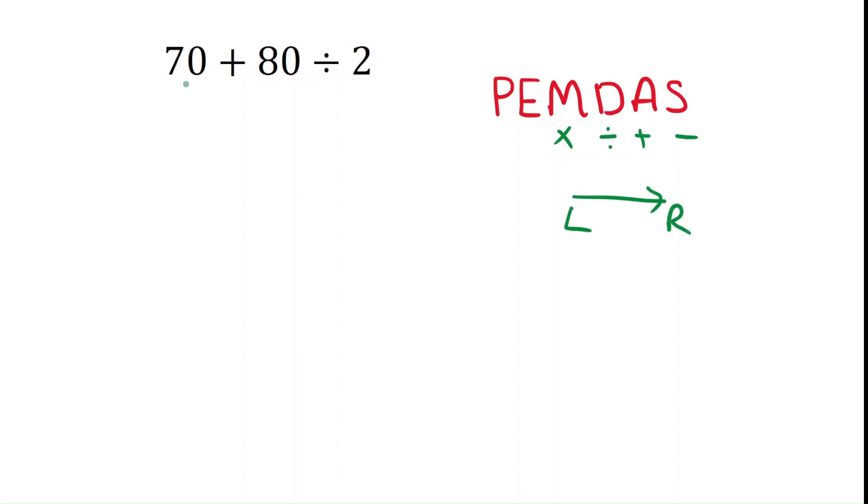So here 70 plus 80 divided by 2. In PEMDAS, what will come first? Division. So you have to do 80 divided by 2. That means 70 plus 80 divided by 2 equals 70 plus 40. So the answer is 110.